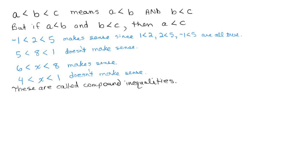For instance, it's like saying if Ann is shorter than Barry and Barry is shorter than Cindy, then Ann is shorter than Cindy.